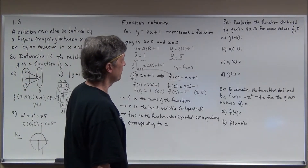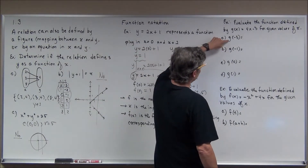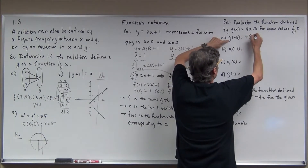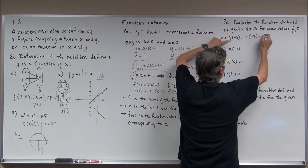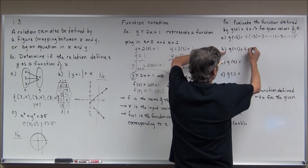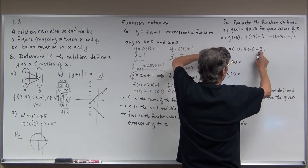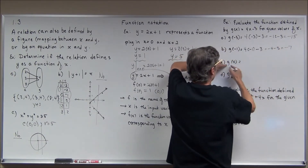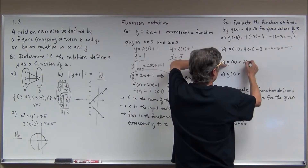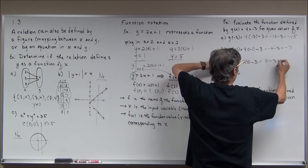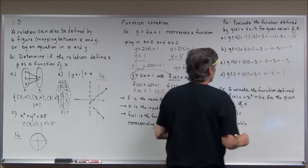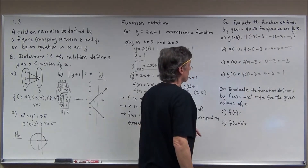Here's an example of using function notation to evaluate at different values. For g(x) = 4x − 3: g(−3) = 4 times negative 3 minus 3 = negative 12 minus 3 = negative 15. g(−1) = 4 times negative 1 minus 3 = negative 4 minus 3 = negative 7. g(0) = 4 times 0 minus 3 = negative 3, which is the y-intercept. g(1) = 4 times 1 minus 3 = 1.